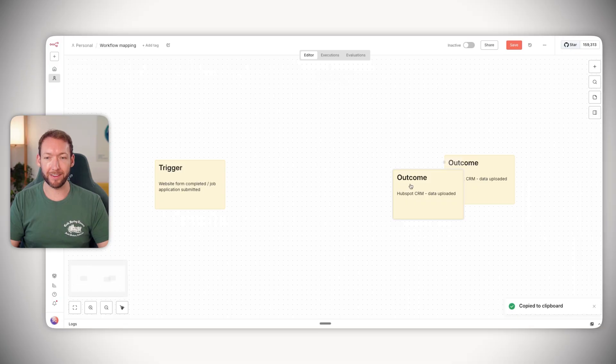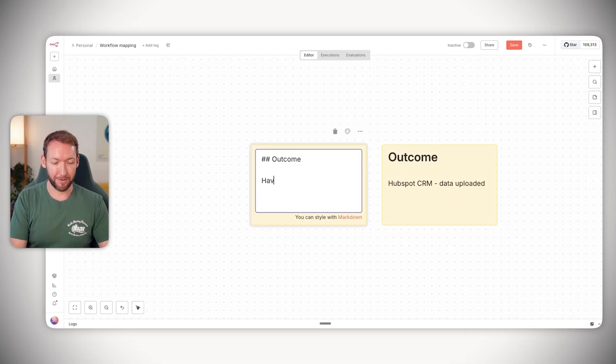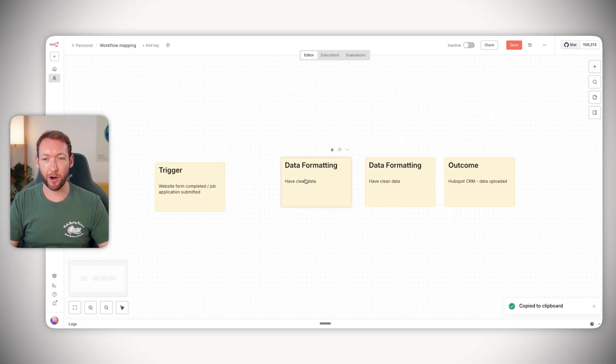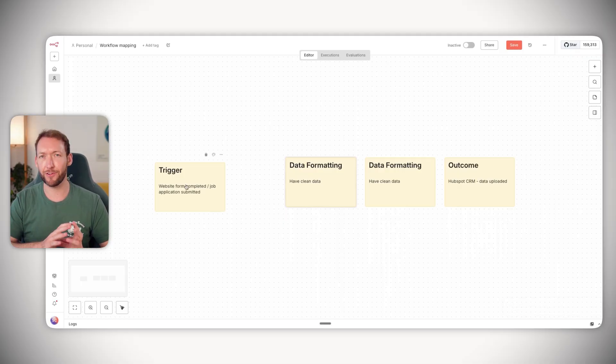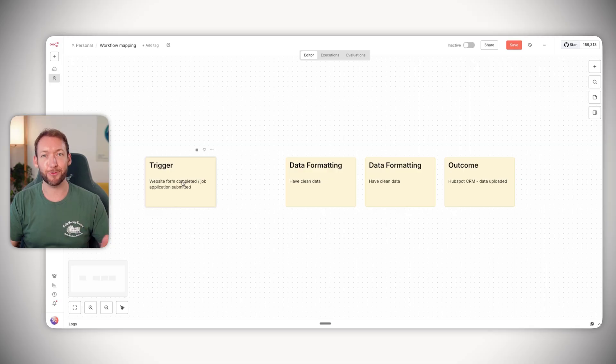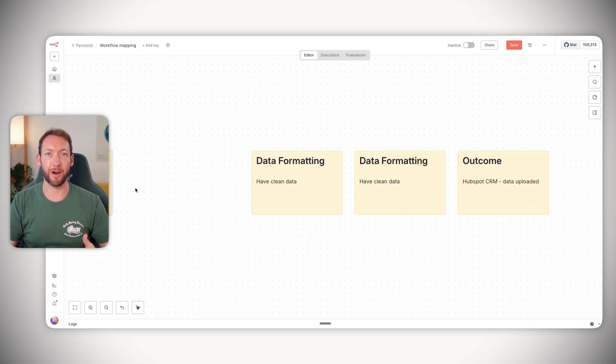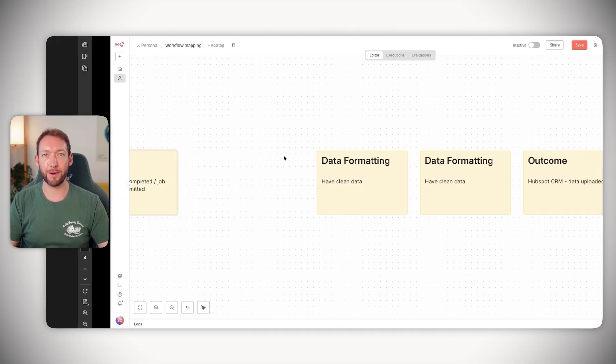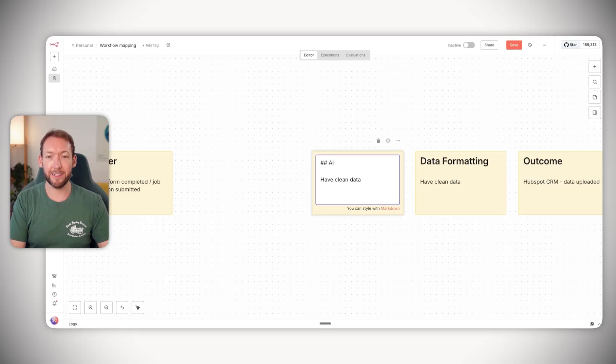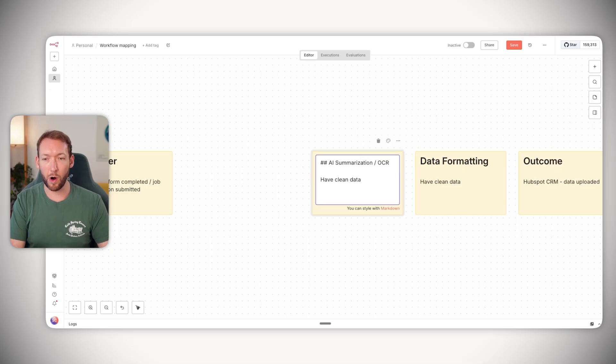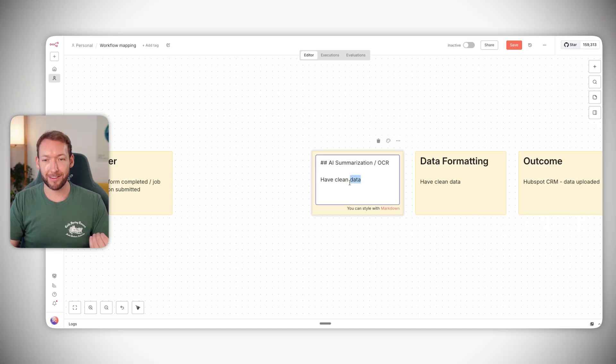We've got the outcome, which is uploaded data into the HubSpot CRM. So at some point, we're going to need to have clean data. So we might need to do some data formatting before we upload to our HubSpot CRM. Now to get that clean data, we know that we're not just taking information directly from our CV and just uploading a CV directly. We know that we're going to need to summarize that information in some way, because what we actually wanted to do was parse their details and categorize it by skill level. So we're going to need to take a bulk input here of their CV and actually get information from that bulk input. So we're probably going to need some sort of AI summarization stage or optical character recognition.